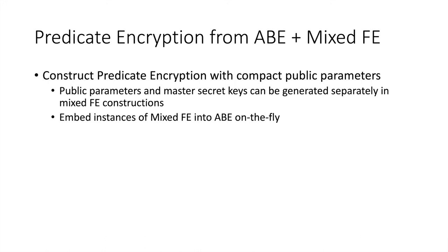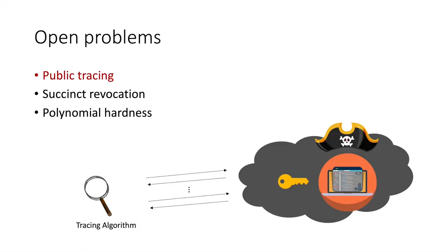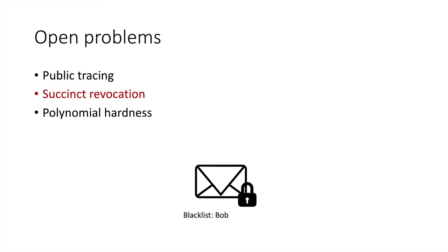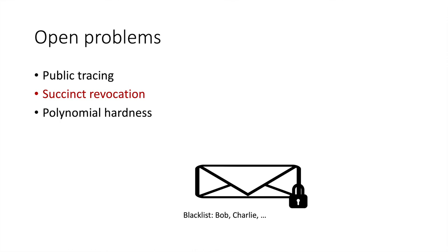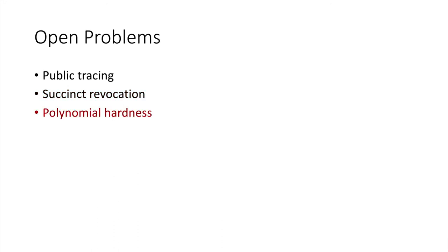The subset cover system used in the paper is more complex than described here, for better efficiency and smaller ciphertext size. Some open problems: first, achieving public tracing, where the tracing key is public and anyone can trace decoders. Second, achieving succinct ciphertext — currently the ciphertext size grows linearly with the revocation set size, and it would be nice to get this down to sublinear. Third, our security currently relies on the sub-exponential hardness of LWE; it would be nice to rely only on polynomial hardness of LWE. Thank you.